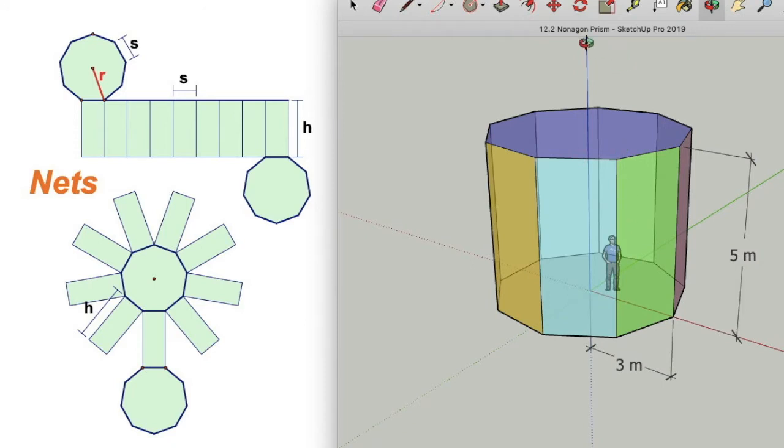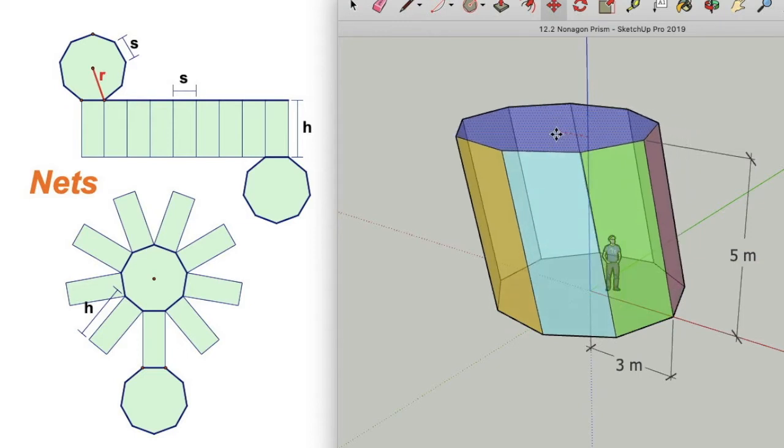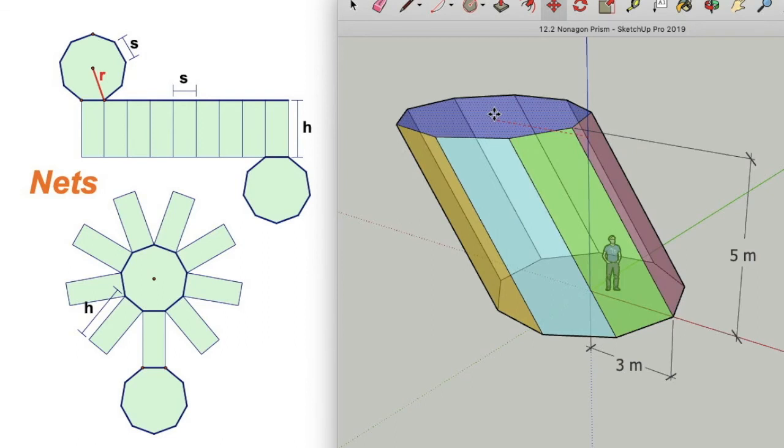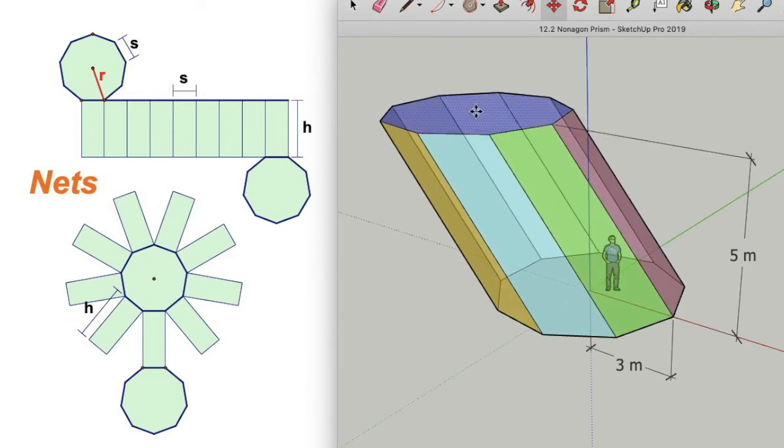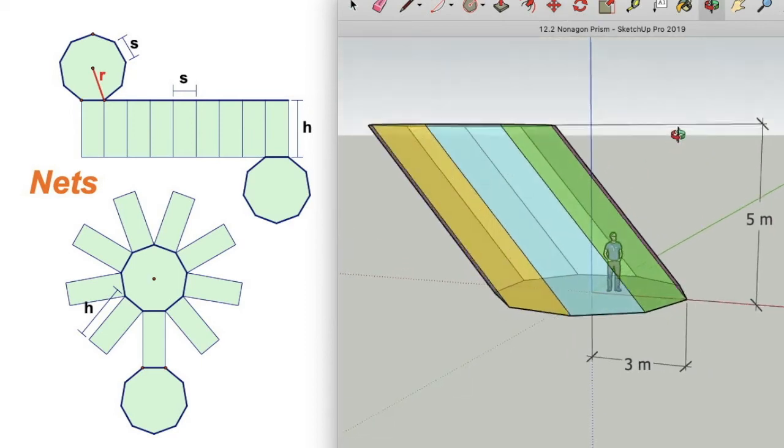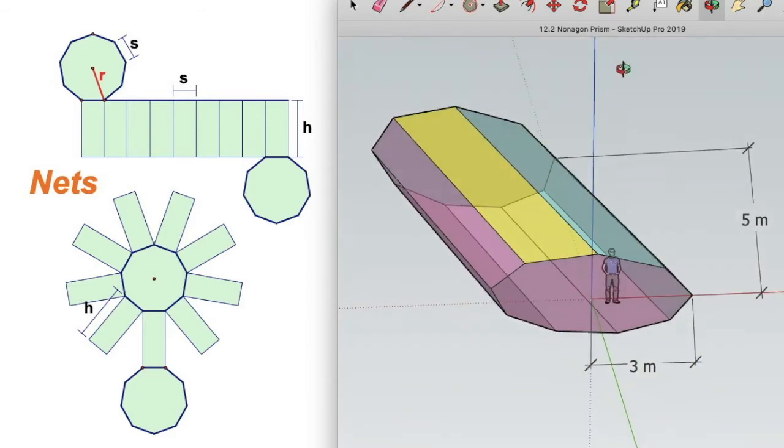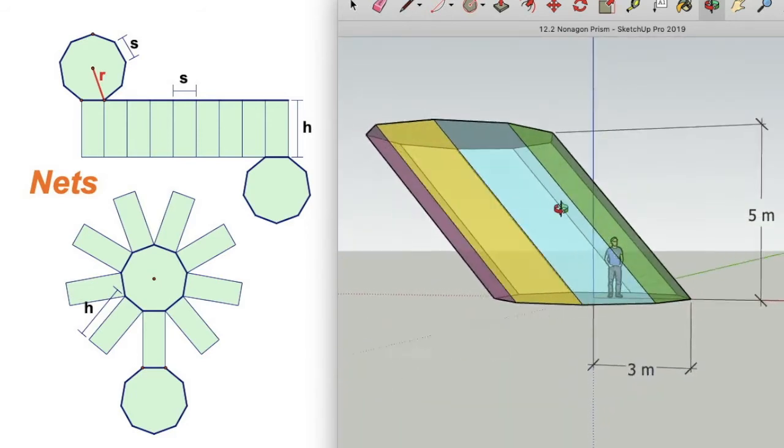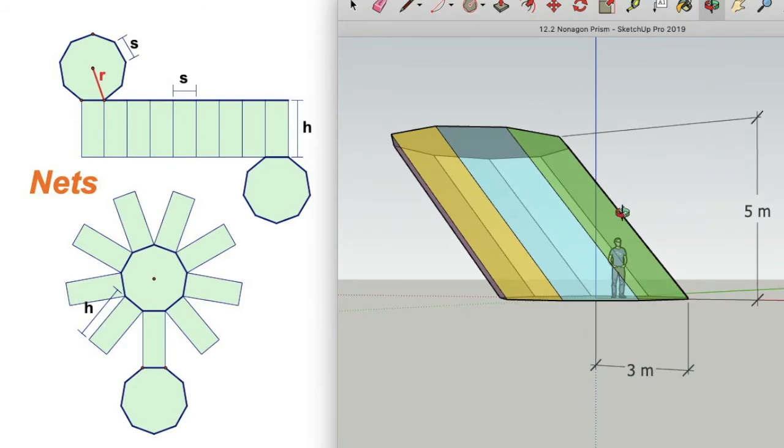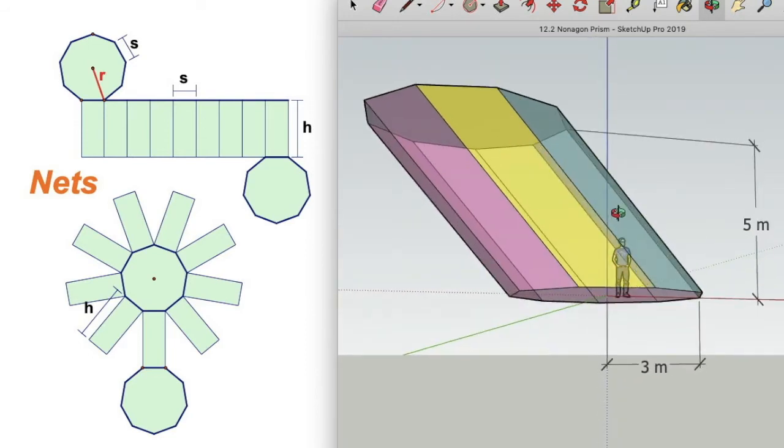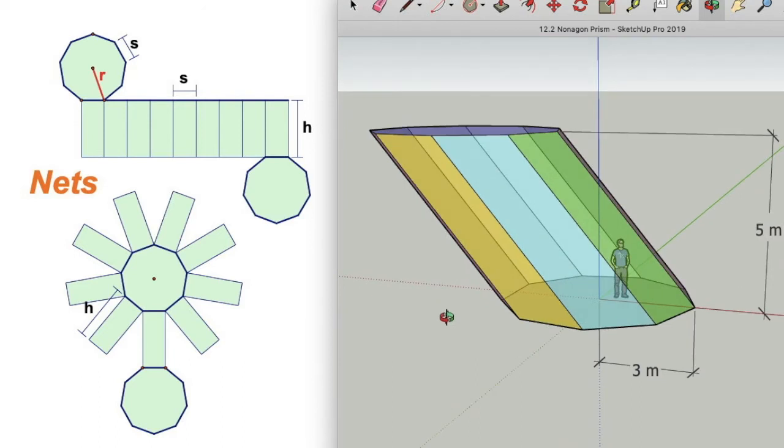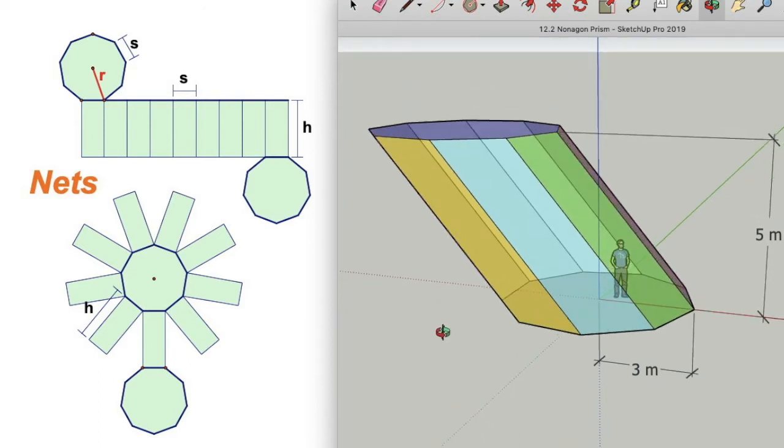I want to make this one other thing clear, that we call this a right prism, and that's because it's not like this. If I shear this prism like this, it's got the same height but it's no longer a right prism. As you can see, those other sides are not necessarily rectangles. Most of them are parallelograms.